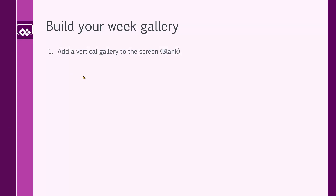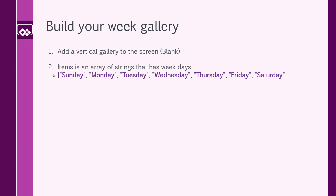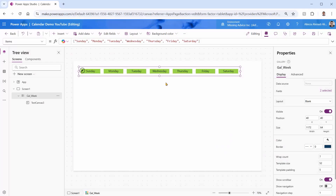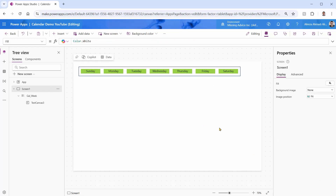So I added the vertical gallery to the screen. Items is an array of strings that has weekdays — Sunday, Monday, Tuesday, to the end of the week. Then set the number of columns, which was wrapCount to 7, and add the text label to the gallery and fit it to the center. This is exactly what we did, and your final gallery should look like this. We only need to set the border to make it exactly like that. So let me set the border to maybe 2. Beautiful.